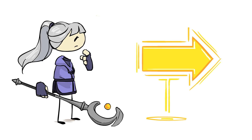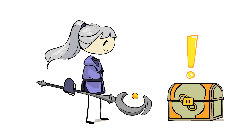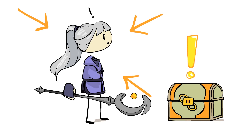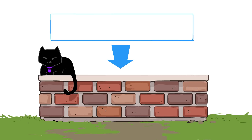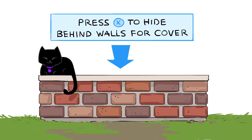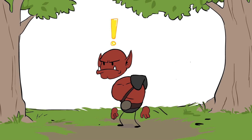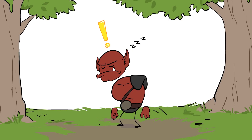Spatial UI is often seen in glowing boxes that point where to go, or exclamation points that mark points of interest. We can reasonably guess that there really isn't a giant box hovering over a wall saying 'Press X to hide behind walls for cover,' or that someone just stands around in town all day with a bright yellow punctuation mark dangling over their head.